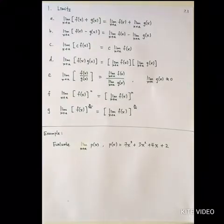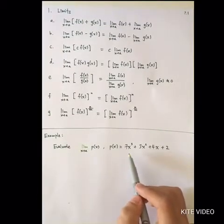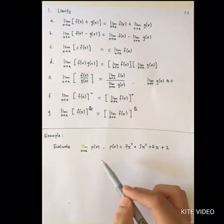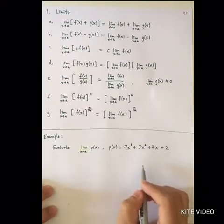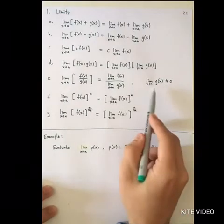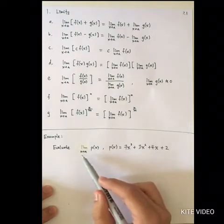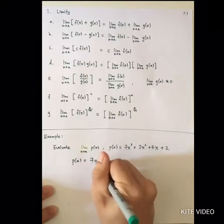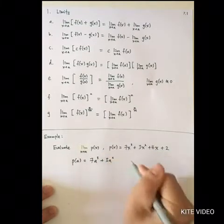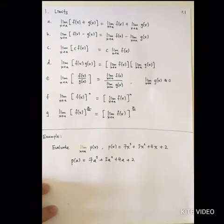Usually in the test, they will ask you to evaluate the limit. For example, you will be given some polynomial. Here, p(x) is 7x³ plus 3x² plus 4x plus 2, and you are asked to evaluate the limit when x approaches a. The easiest way is to do direct substitution. There are no divisions and no denominators, therefore you don't have to care about whether the denominator equals zero. If you directly substitute x with a, you get 7a³ plus 3a² plus 4a plus 2, and this will be your answer.